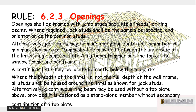Clause 6.2.3 states that openings shall be framed with jamb studs and lintels, heads, or ring beams. Where required, jack studs shall be the same size, spacing, and orientation as the common studs. Alternatively, jack studs may be made up by horizontal nail lamination. A minimum clearance of 15mm shall be provided between the underside of the lintel, ring beam, or trimmer and the top of the window frame or door frame.